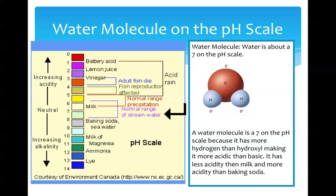The water molecule is about a 7 on the pH scale. This is because it has more hydrogen than hydroxyl, making it more acidic than basic. It has less acidity than milk and more acidity than baking soda.